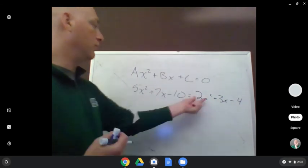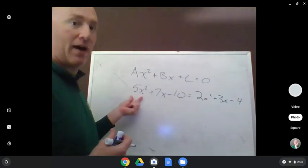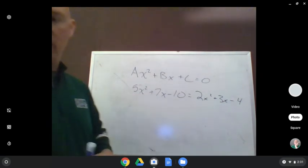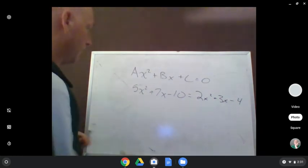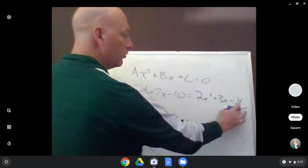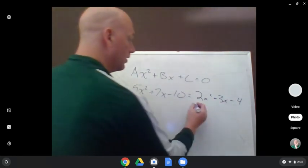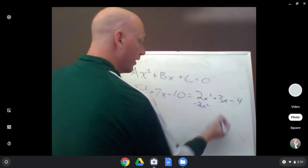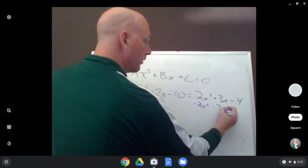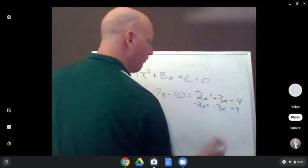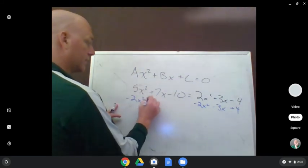So I always prefer to move the stuff over to the side that has the positive x squared. You can move it any direction you want. I'm going to move them all in one step. So I look, I'm going to remove this stuff from the right-hand side. I'm going to have to subtract 2x squared from each side, subtract 3x from each side, and add 4 from each side. So now I'm just going to show that step.